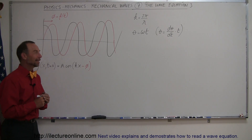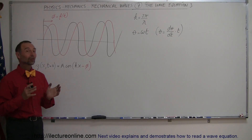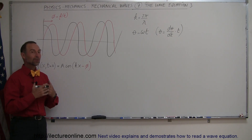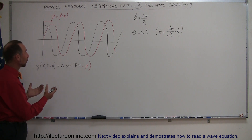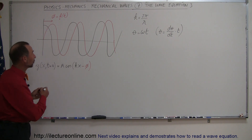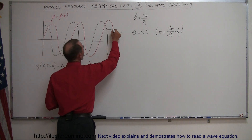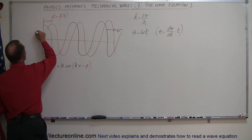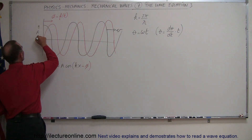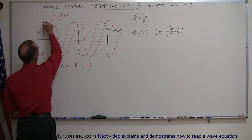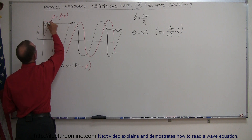Welcome to Electron Line. In this video we're getting closer and closer to the real representation of a wave equation — a wave moving to the right with velocity v, amplitude A, and wavelength lambda.